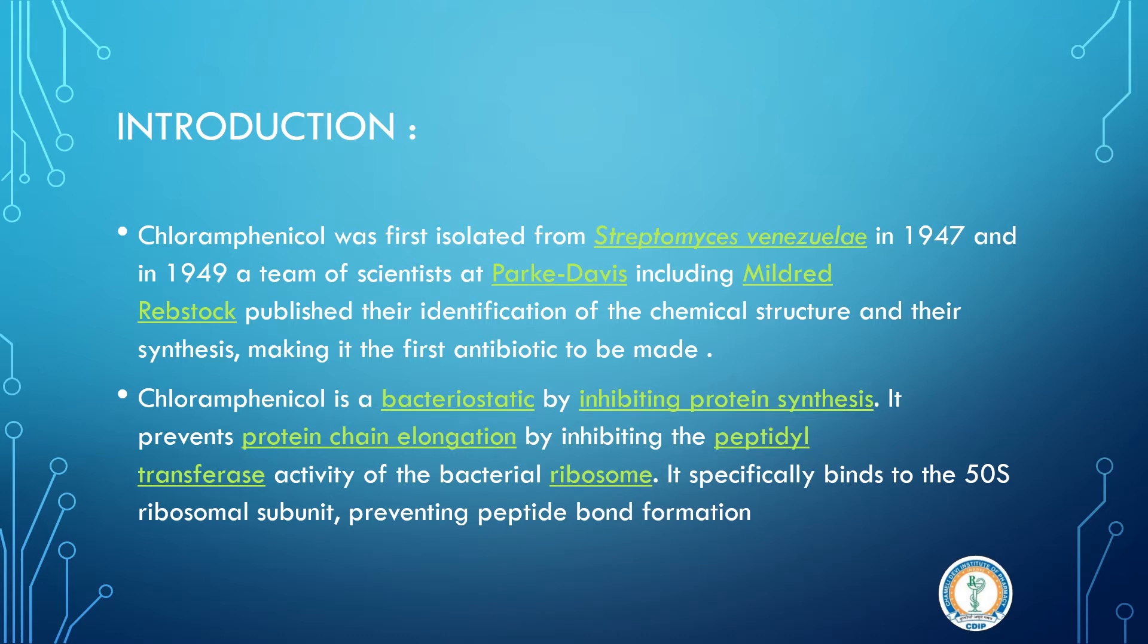Chloramphenicol was discovered after being isolated from Streptomyces venezuelae in 1947. Its chemical structure was identified and it was first synthesized in 1949. Chloramphenicol acts by inhibiting protein synthesis. It binds reversibly to the 50S ribosomal subunit and prevents peptide bond formation.